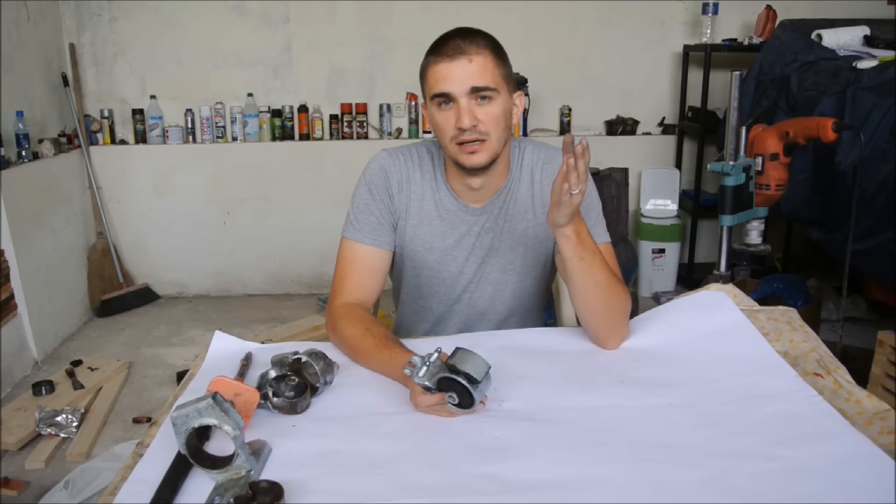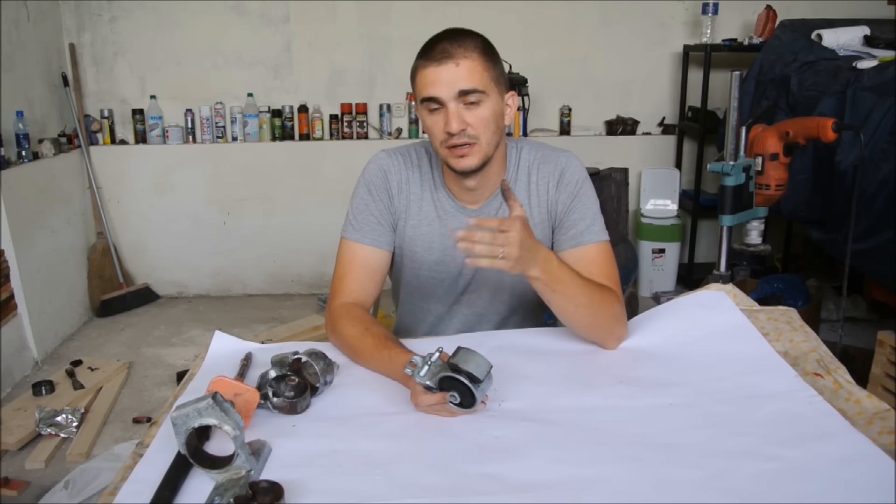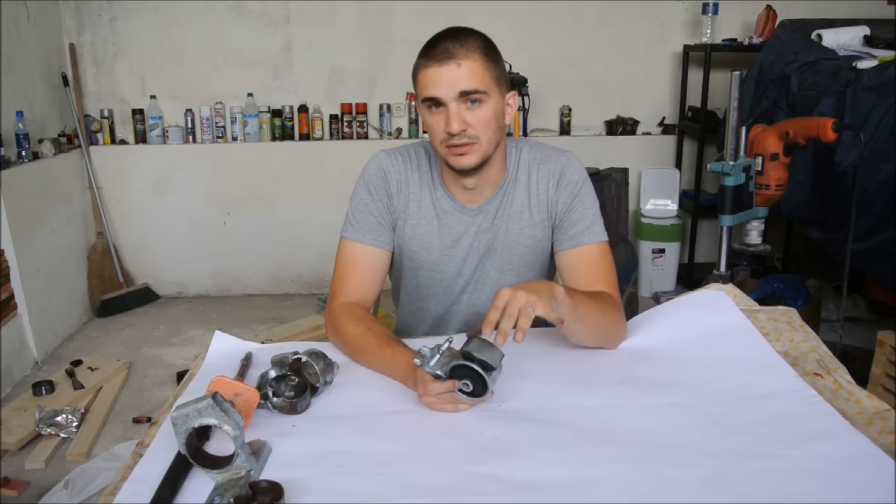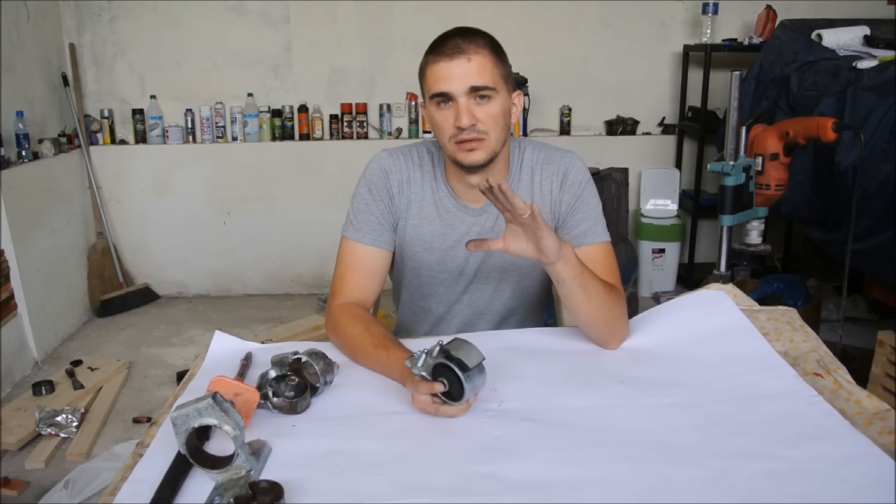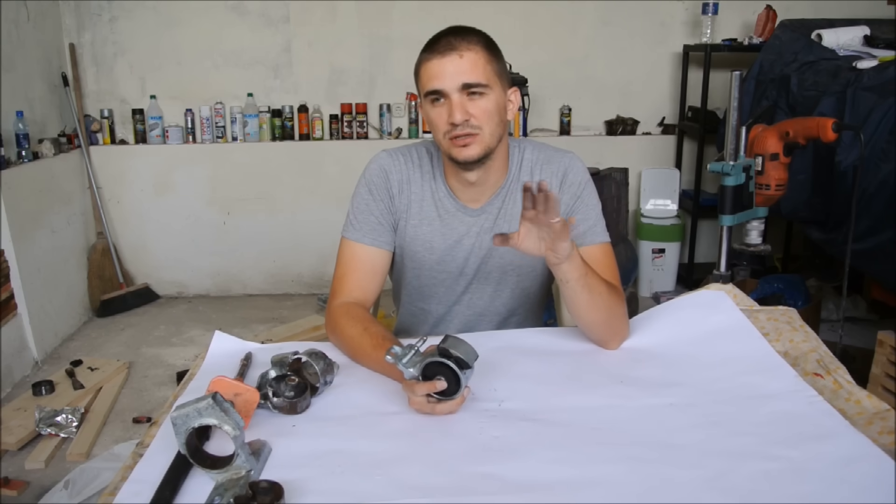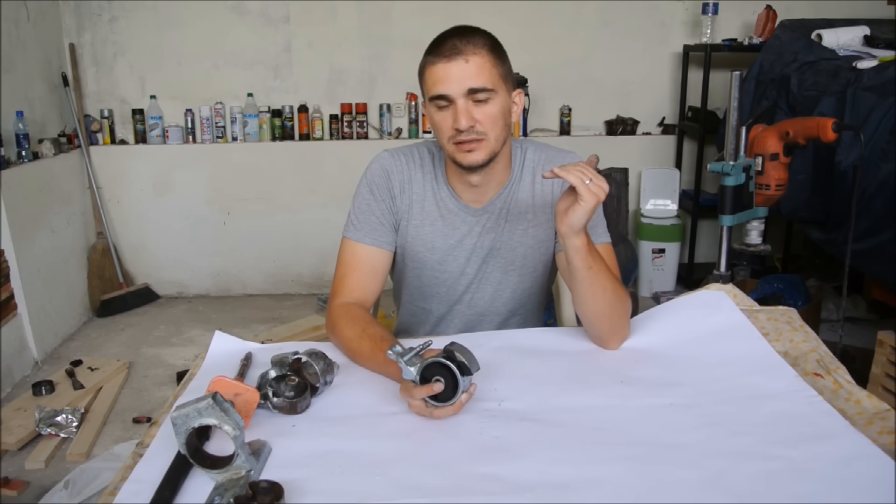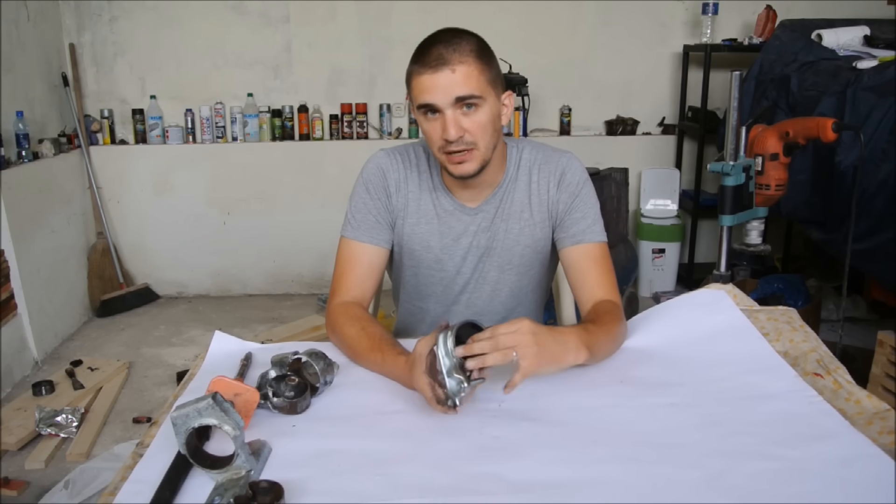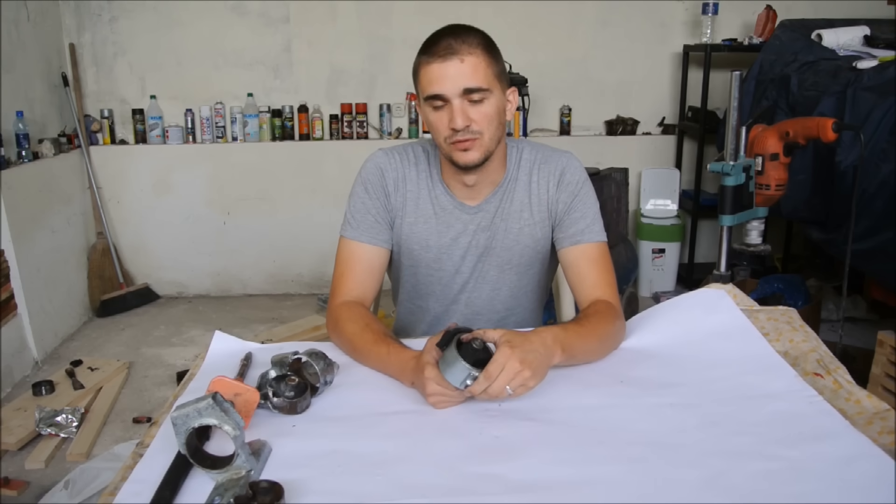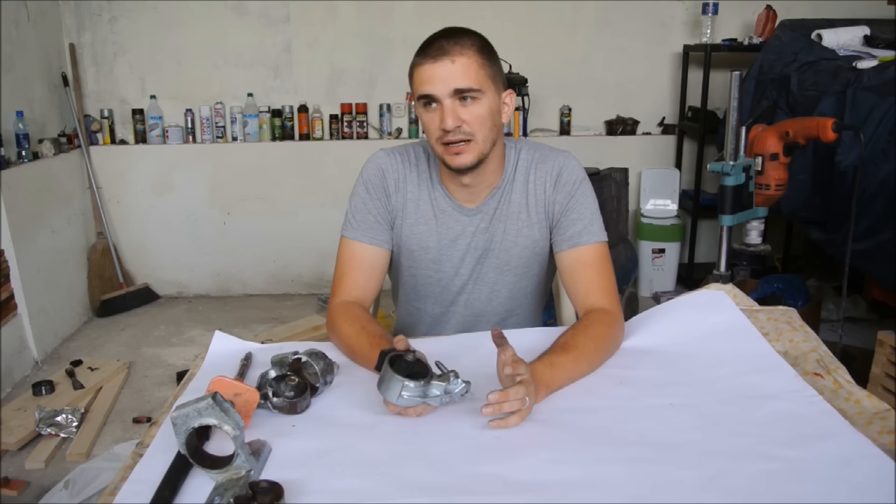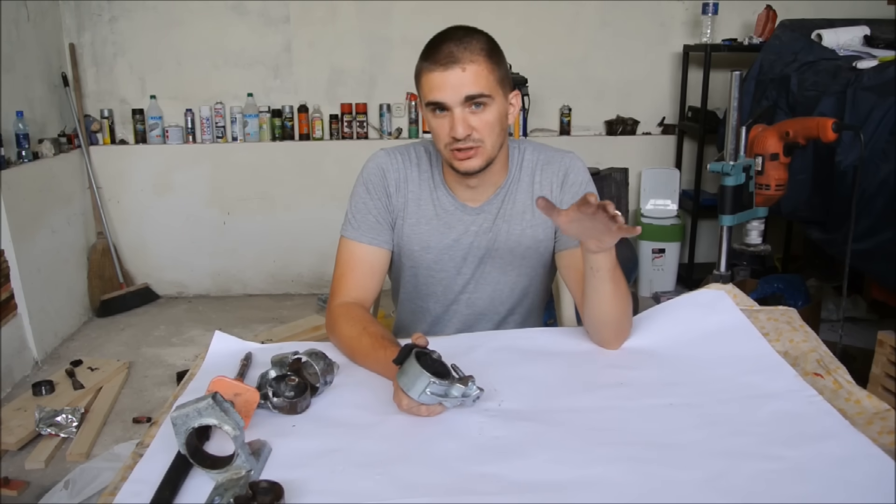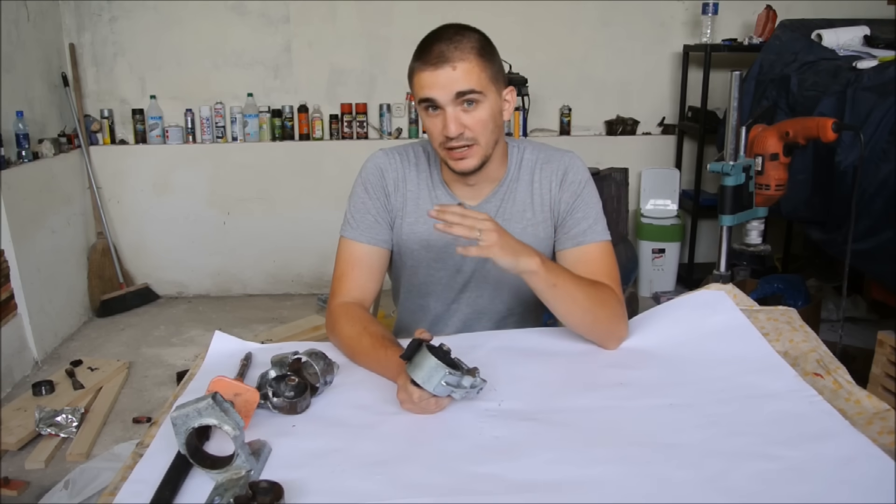Now the second reason why you should do this yourself is the ability to customize the stiffness of your mounts. Now aftermarket mounts for most cars usually come in just one Shore hardness. So what is Shore hardness? Shore hardness is the measure of stiffness of a rubber compound. So for example the aftermarket mounts you can find out there, most of them are 88 Shore hardness. So compared to the stock, which is usually around 48 Shore hardness, that is twice as stiff.